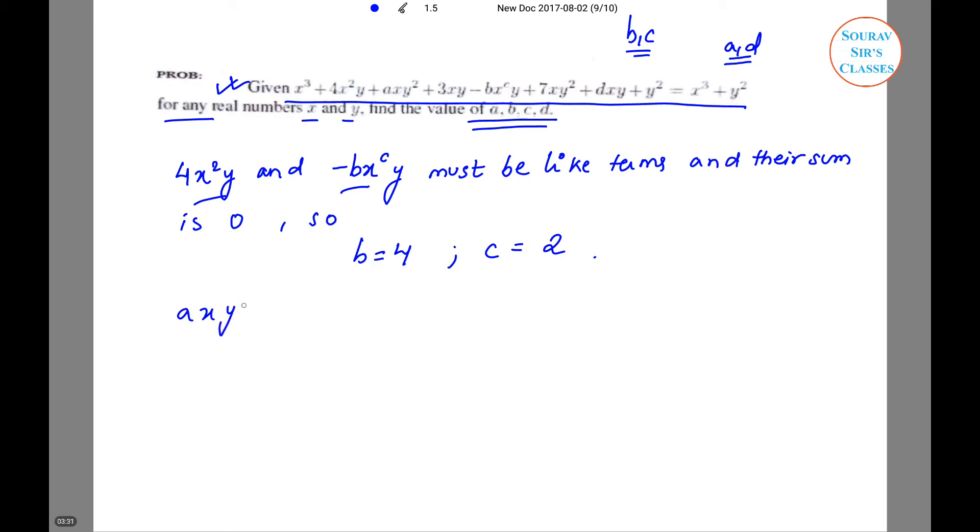Now, axy² + 7xy² is equal to 0, and dxy + 3xy is also equal to 0. Let me make the alteration - it will be 3 rather than 2. Okay, for every x and y